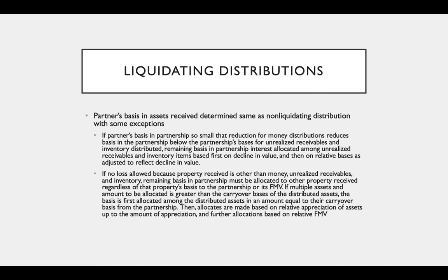The second exception: if there's no loss allowed because the property received is other than money, unrealized receivables, and inventory — for example, a building — the remaining basis in the partnership must be allocated to other property received regardless of that property's basis to the partnership or its fair market value. Any leftover basis in the partnership has to be allocated to that asset, even if that basis is very high compared to its fair market value.